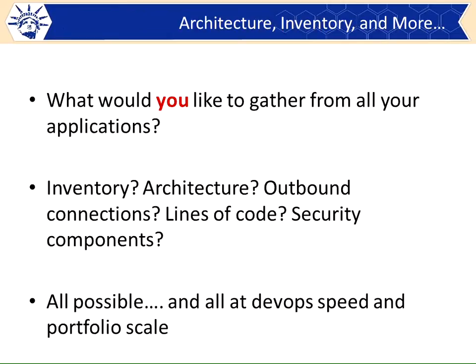There's other data we can gather from applications that's really powerful — not just about vulnerabilities, but security intelligence from all our applications. Can we inventory all our applications in real time? Absolutely. We can say how many lines of code they are and what frameworks they're built on. I've worked with companies where there's a team of people whose job it is just to inventory all the apps and come up with a risk ranking. We can automate a lot of that by gathering data directly from the applications with sensors at various stages of the lifecycle. This is all possible at DevOps speed and portfolio scale if we set our minds to it.